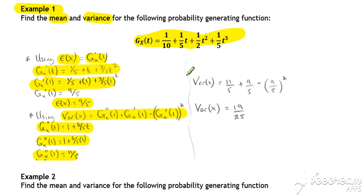Then use our quotable formula, so it's equal to 11/5 plus 9/5 minus (9/5)², so variance of x is 17/25.